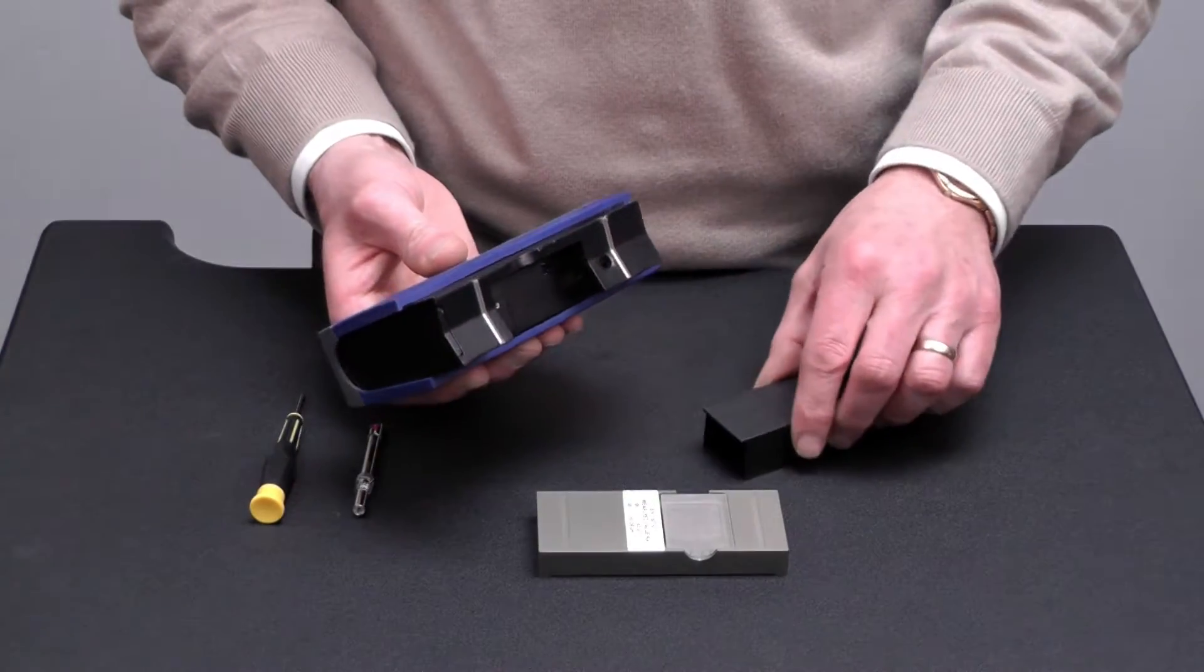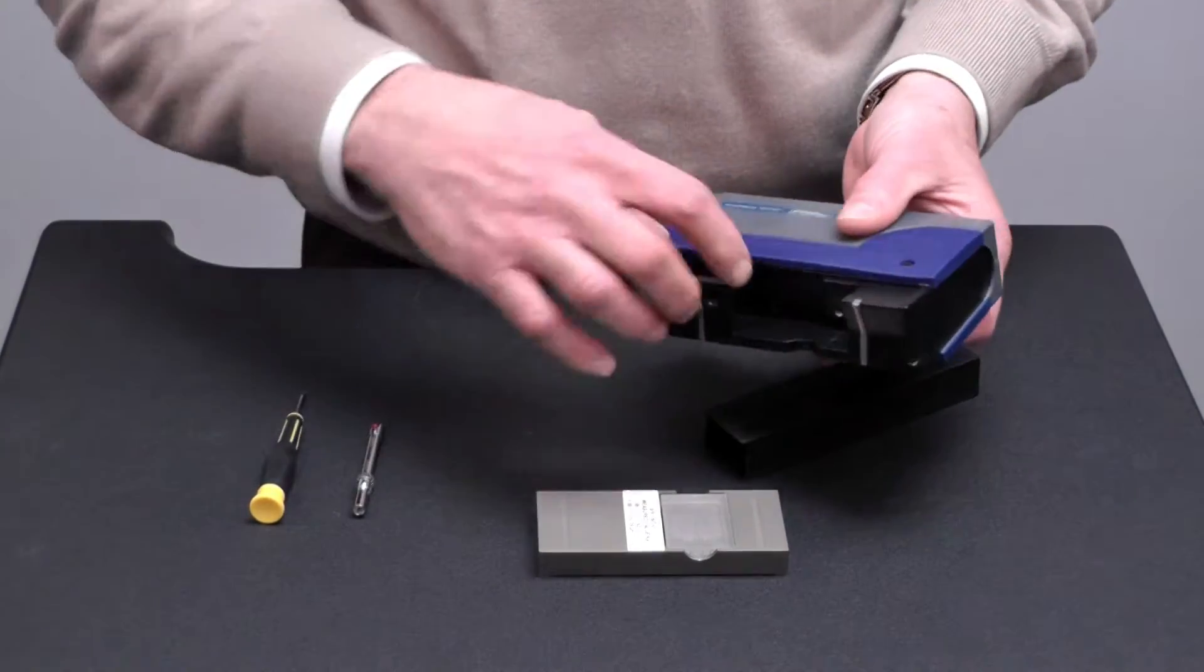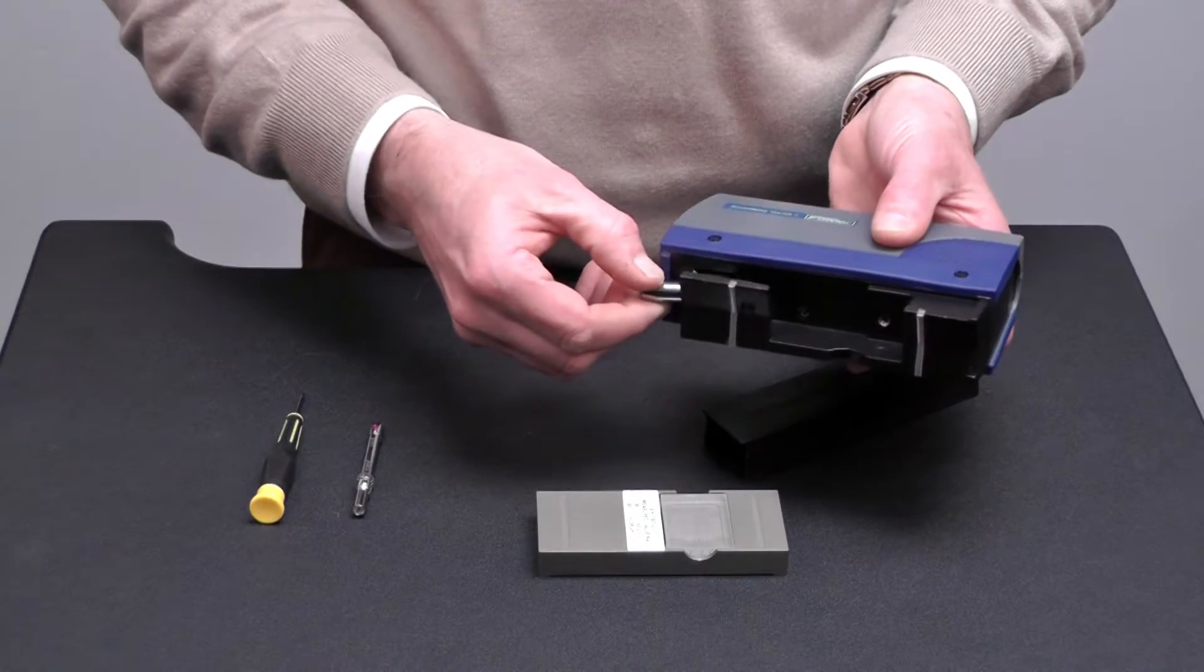Slide the protective cover off. Turn the measuring carriage out to the front.